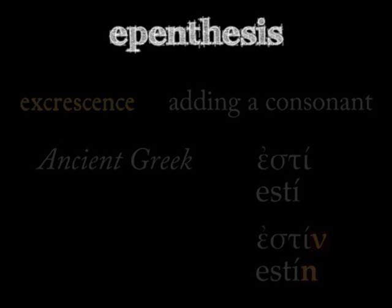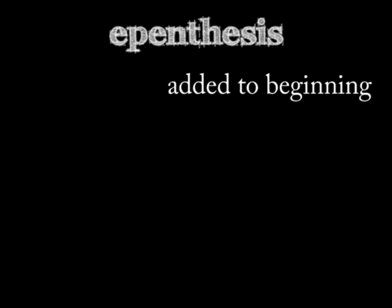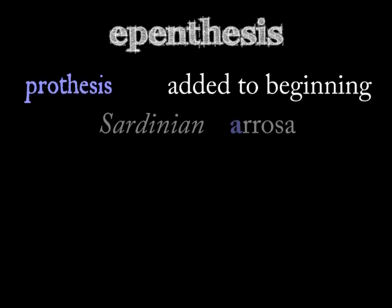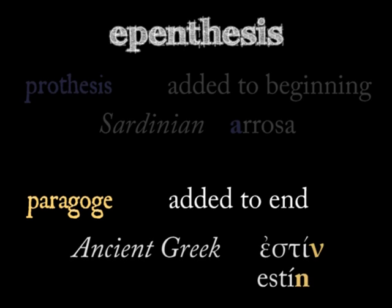Not all epenthesis happens in the same place either. If the phoneme is added to the beginning of a word, it's called prothesis. The Sardinian example, 'arrosa,' adds a prothetic 'a.' If the phoneme is added to the end of a word, it's called paragogy. The ancient Greek word 'estin' adds a paragogic end.